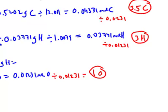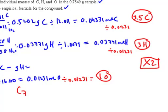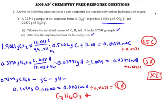I can't round 3.5 up to 4 or down to 3 — I have to keep it at 3.5. So what I need to do to get whole numbers is multiply everything by 2. That gives me 7 carbons, 6 hydrogens, and 2 oxygens. There's my empirical formula — my simplest whole number ratio. It's still the same ratio, 3.5 to 3 to 1, but expressed as whole numbers: C₇H₆O₂.